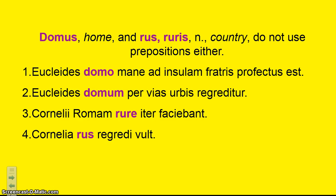There are a couple more words that follow this pattern: 'domus' meaning home, and 'rus, ruris' neuter meaning country — these don't use a preposition either. For example: 'Euclides domo mane ad insulam fratris profectus est' — Euclides set out early in the morning from home to his brother's apartment, where 'domo' is ablative. And when you see it with the accusative case, Euclides returned home through the streets of the city. 'Rure' — R-U-R-E — is actually ablative, so the Cornelii were traveling to Rome from the country.